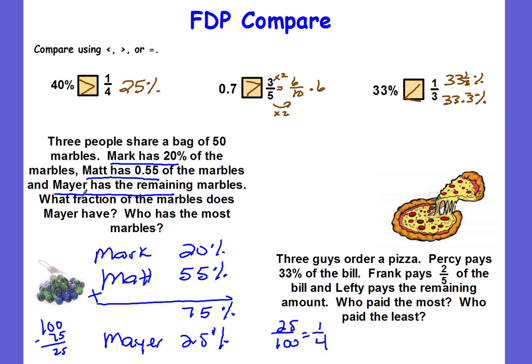So Mayor has one-fourth of the marbles. Who has the most? The most is going to be Matt — he has 55 percent. That's how you compare: put them all in the same form and compare. It doesn't have to be all decimals like for number lines — here I used percents.